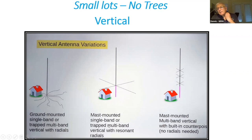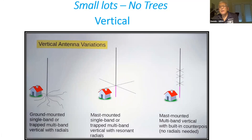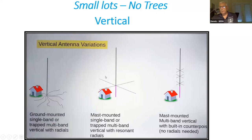The problem with some of the verticals is that they're very narrow bandwidth, which means if you want to work on SSB you can tune it for that, but if you need to work CW, which is down at the bottom of the band, you have to use a tuner. In some cases you might even have to go back out to the antenna and rearrange the coils, but they are very efficient, especially if you have a small piece of property.